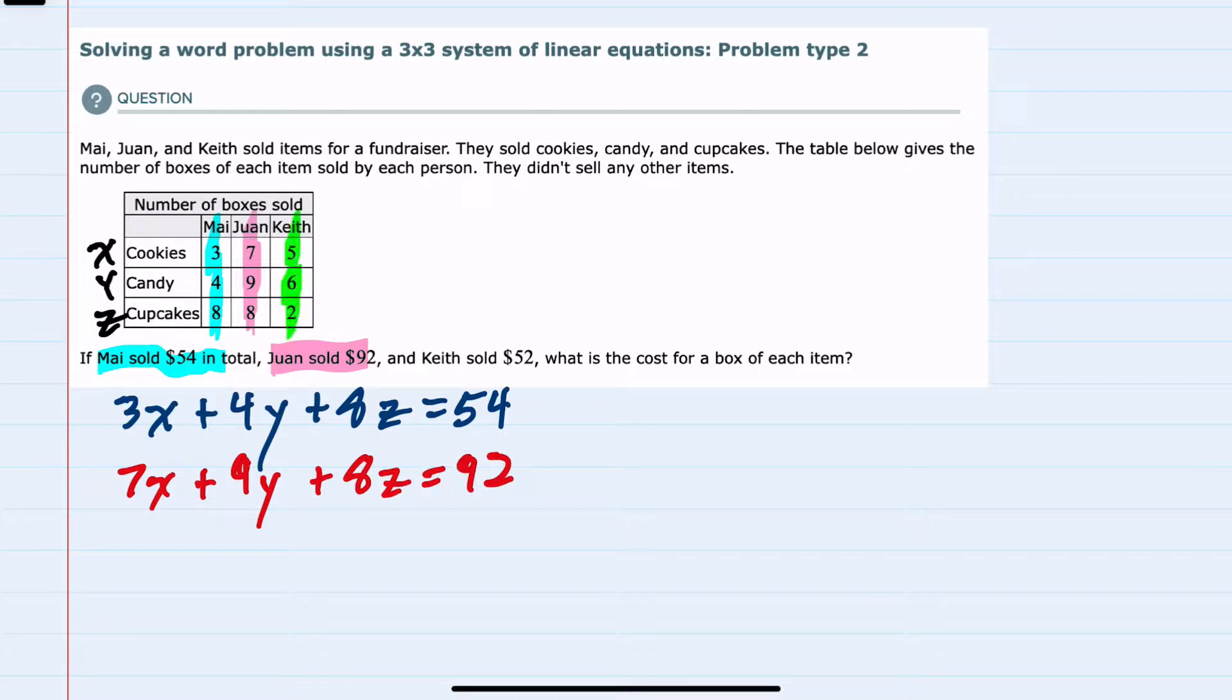And then for Keith, Keith sold 5 cookies, so 5 times X, 6 candy, 6 times Y, 2 cupcakes, 2 times Z, and his total is $52. We now have three equations with three unknowns, so a three-by-three system of linear equations.